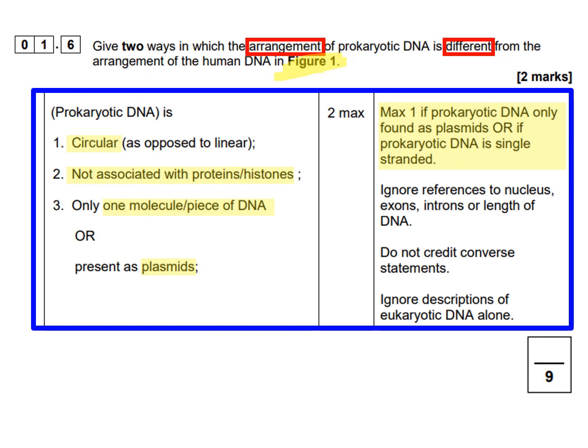The mark scheme notes a maximum of 1 mark if you said prokaryotic DNA is only found as plasmids, or if you said prokaryotic DNA is single-stranded — which it isn't; it is double-stranded just like eukaryotic DNA. Ignore references to the nucleus, exons, introns, or the length of the DNA, as those relate to structural differences rather than arrangement. Do not credit converse statements — the question asks you to describe the prokaryotic DNA arrangement and how it differs from what we can see in figure 1.